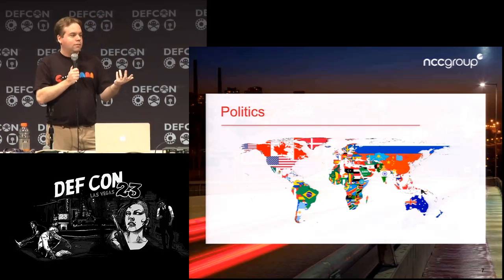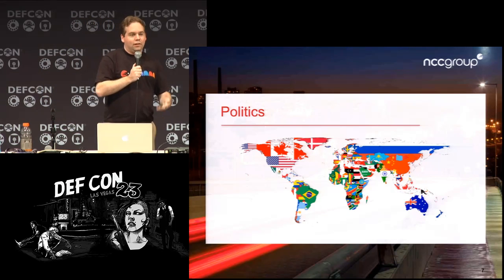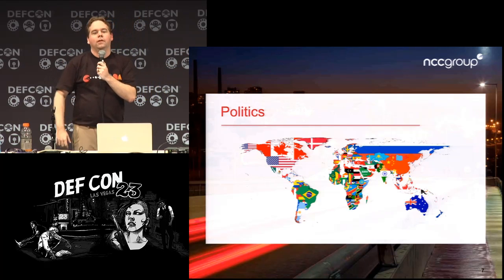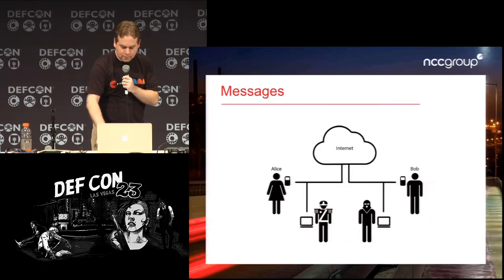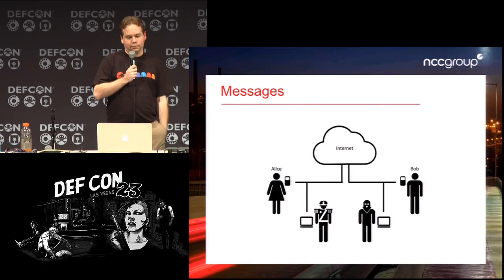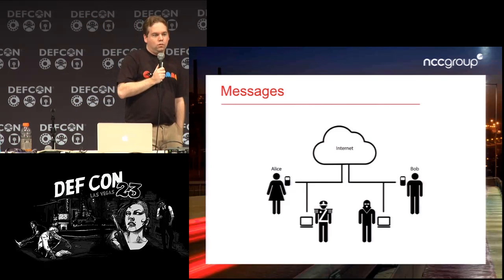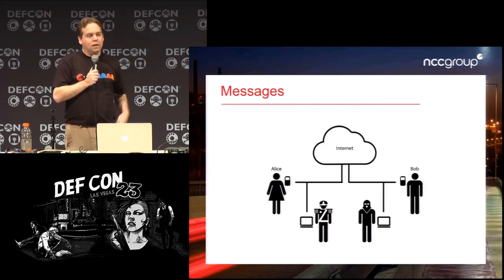Even if you think you don't need these things, other people do. Furthermore, in the U.S. there are legally enshrined rights to keep secrets from the government — attorney-client privilege, for example, where the courts say you're supposed to keep that stuff away from them. This is a good counter-argument to the 'you have nothing to hide' line. For the purposes of this talk, a message is simply when two people — Alice and Bob — want to send data from one to the other.